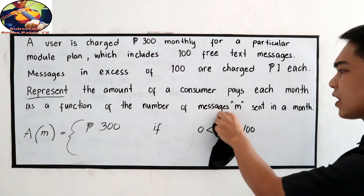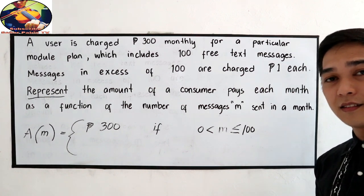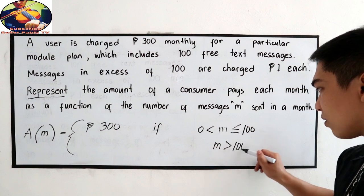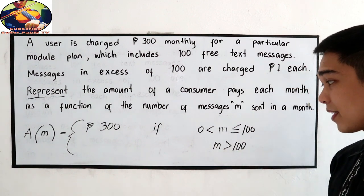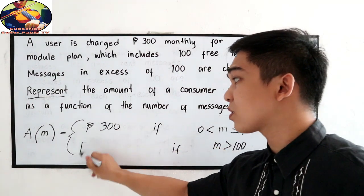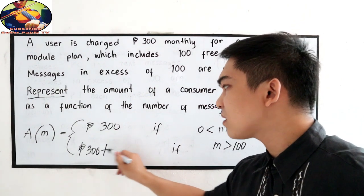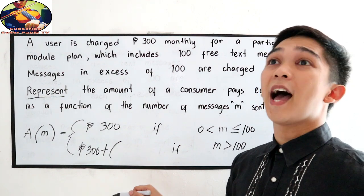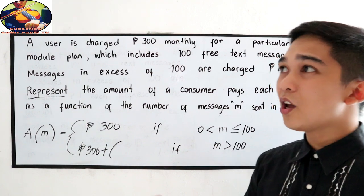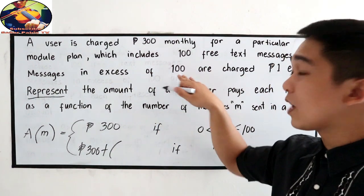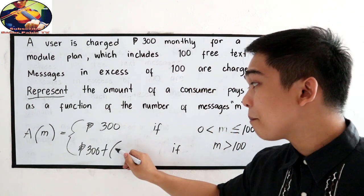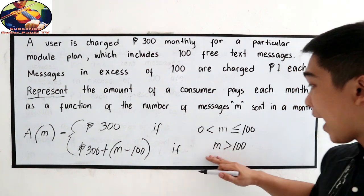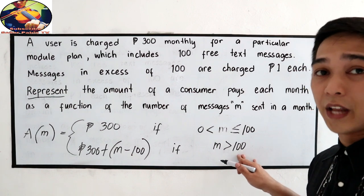Now, what if the consumer exceeds 100 messages? If the number of messages M is greater than 100 — say 101 and above — the consumer still pays the fixed 300 pesos, plus the charge for the excess. For example, if they sent 105 messages, we compute 105 minus the base 100. So the formula becomes A = 300 + (M - 100), if M is greater than 100.